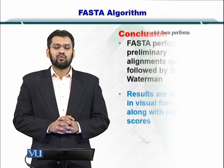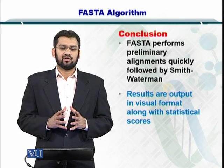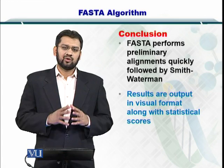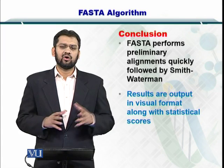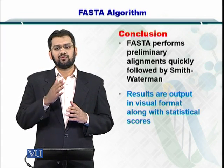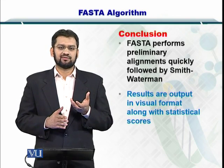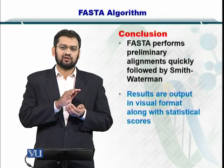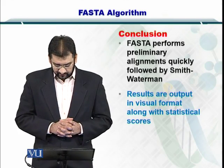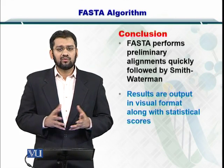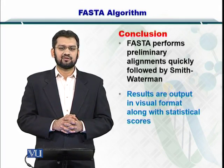So in conclusion, FASTA performs the preliminary alignments by using a dot matrix, dot plot, and then you extend the diagonals that are contiguous, that is, that are connected and are very long. And once you have all such diagonals, you perform a threshold on the length of the diagonals and you only select the best diagonals. So these best diagonals, the longest ones, are then connected using the Smith-Waterman algorithm. And the result can be output in visual format as we just saw, and you can analyze the statistical scores as well.